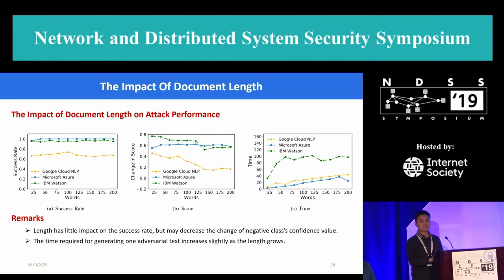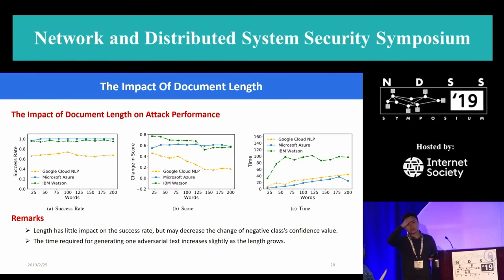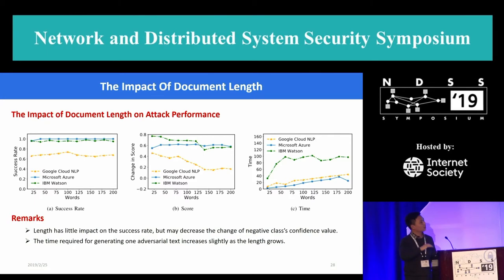Hi, Xiaoqing Liao from Indiana University. Interesting work. Since sentiment analysis and toxic content detection don't always show perfect performance, do you compare the false positive rate of the model originally and your adversarial examples? Since you tested several black box models and these models are not perfect — sometimes they report false positives in your dataset — do you compare the false positive rate with the adversarial examples you generate?